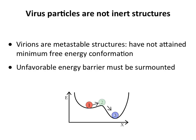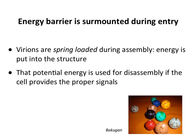In energetic terms, virions are metastable because they're not at their minimum free energy conformation. On a graph of energy versus time, virions exist at an intermediate energy level. They would like to get down to the minimum energy level, but there is usually a barrier to achieving that. The virion as it passes from cell to cell is stable and protects the genome, but to release its nucleic acid it must surmount this unfavorable energy barrier during entry, and the triggers are provided by the host cell.